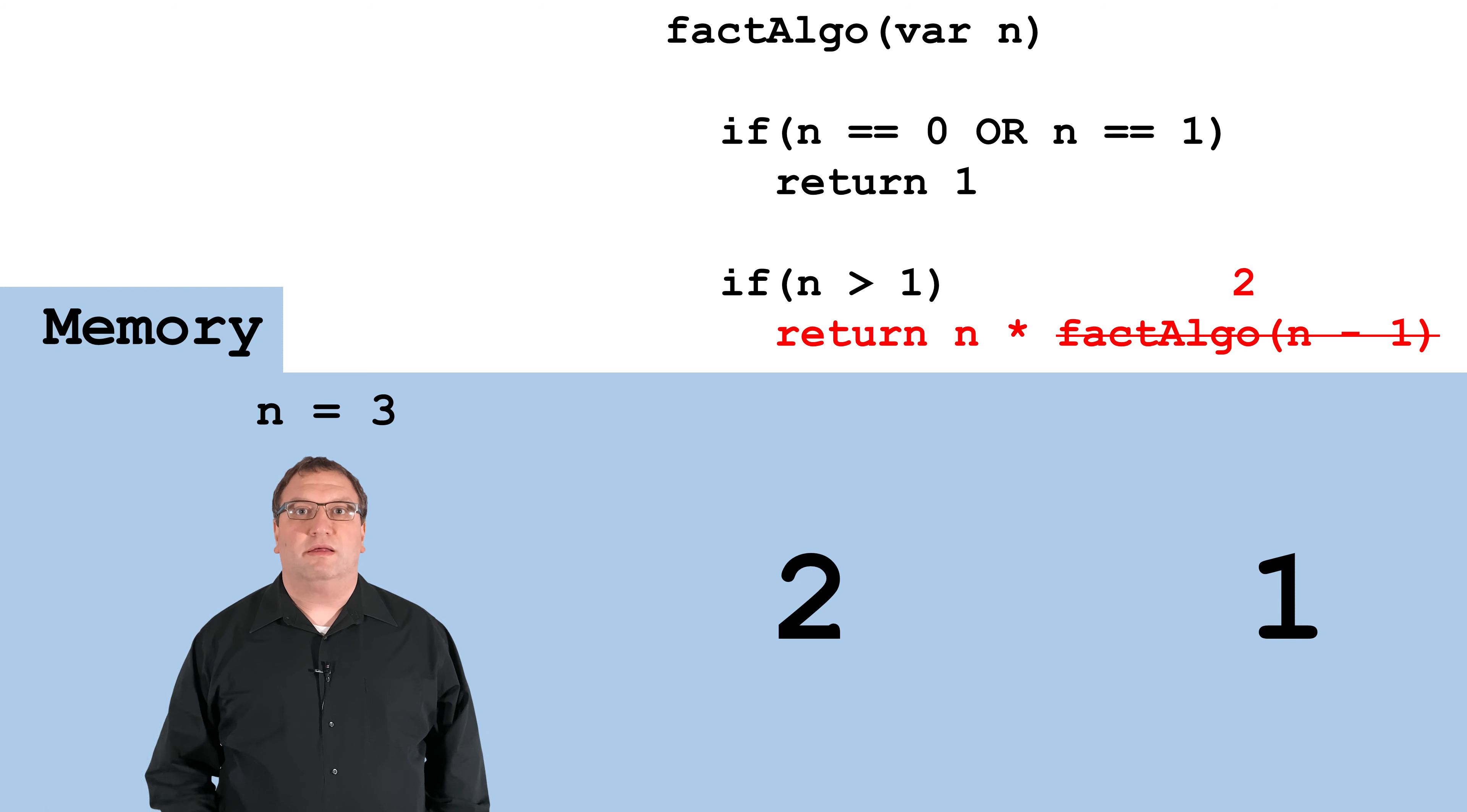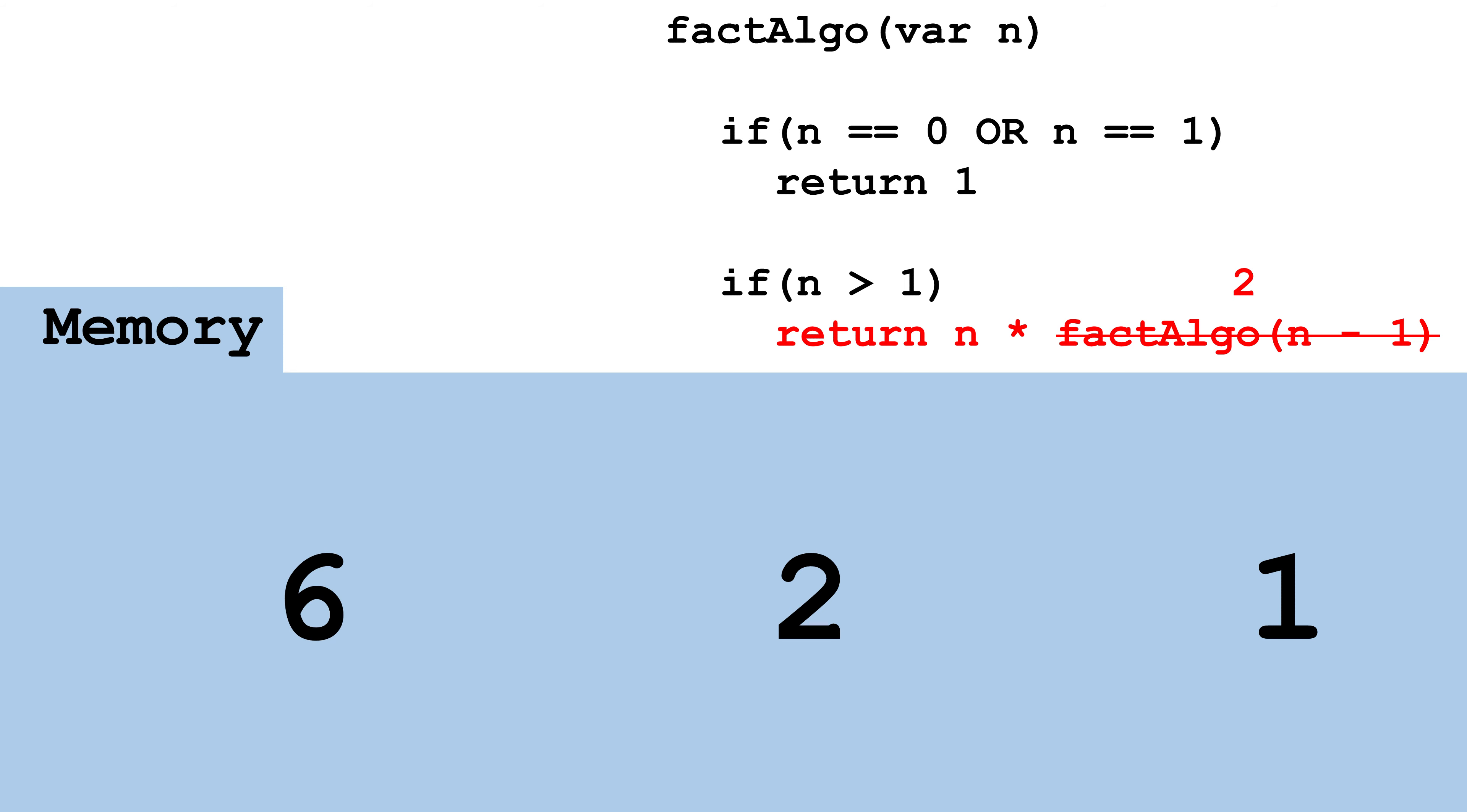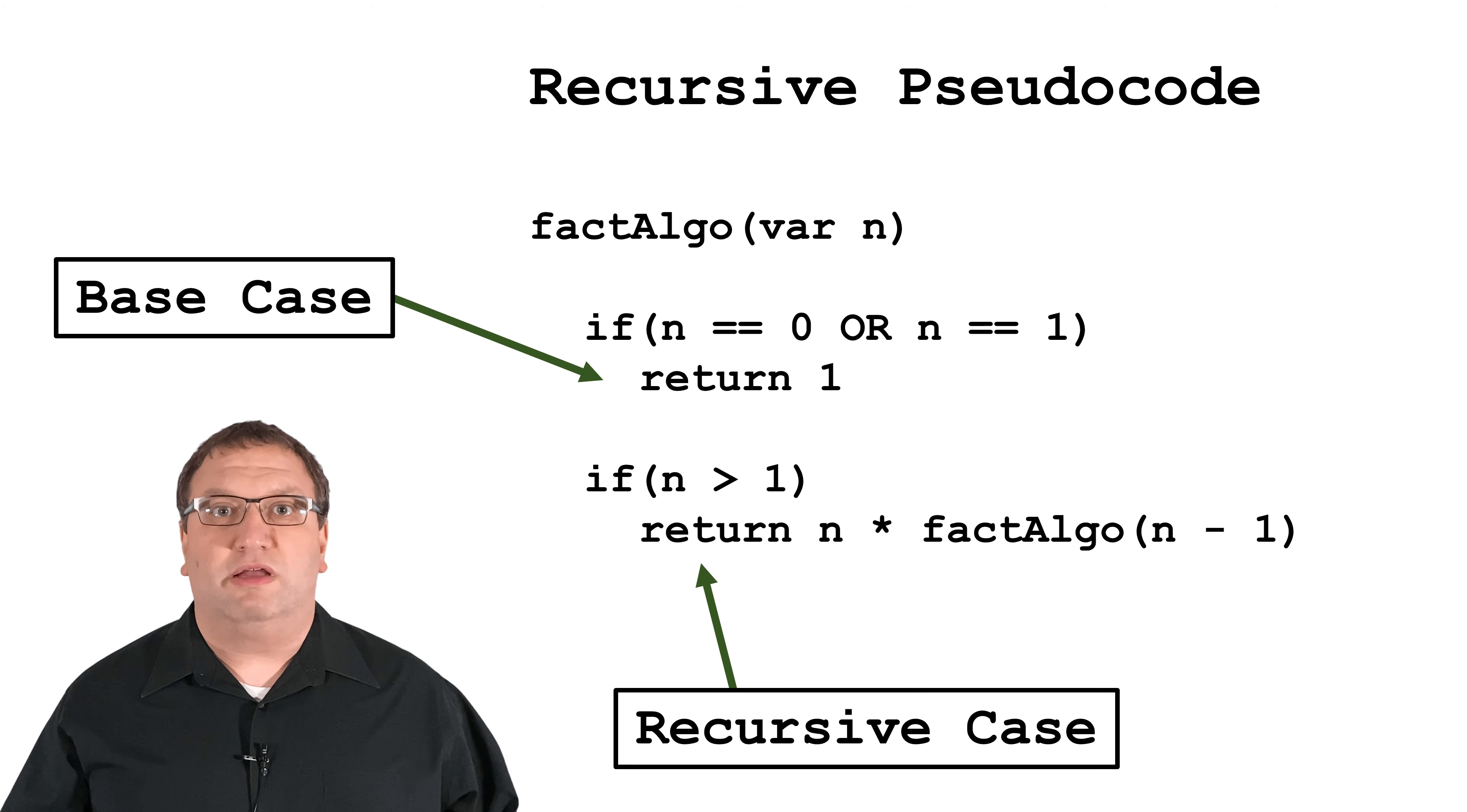Now I know that 2 factorial is 2, so I can multiply it by my n, which is 3. 3 times 2 is 6, so I'll return the final answer of 3 factorial, which is 6.